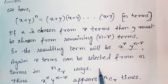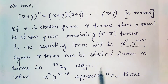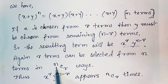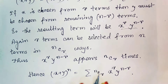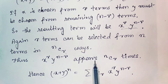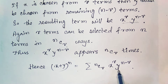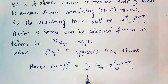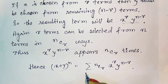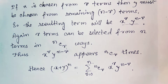r terms can be selected from n terms in nCr ways. So x^r · y^(n−r) appears nCr times. Hence, we can write (x + y)^n = nCr · x^r · y^(n−r), and taking the summation where r goes from 0 to n gives us the binomial theorem.